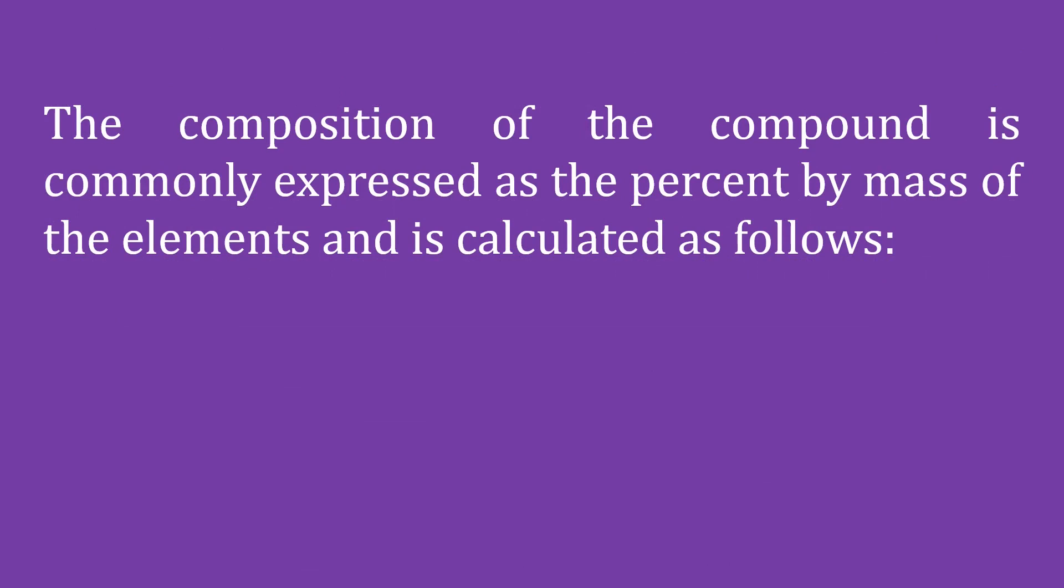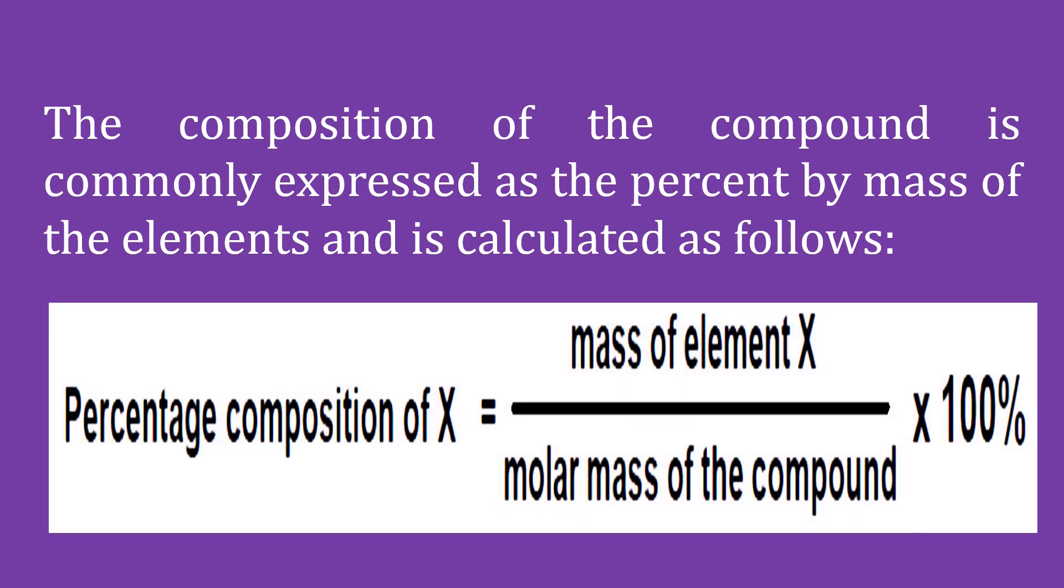The composition of the compound is commonly expressed as the percent by mass of the elements and is calculated as follows: Percentage composition of X equals mass of element X over molar mass of the compound times 100%.